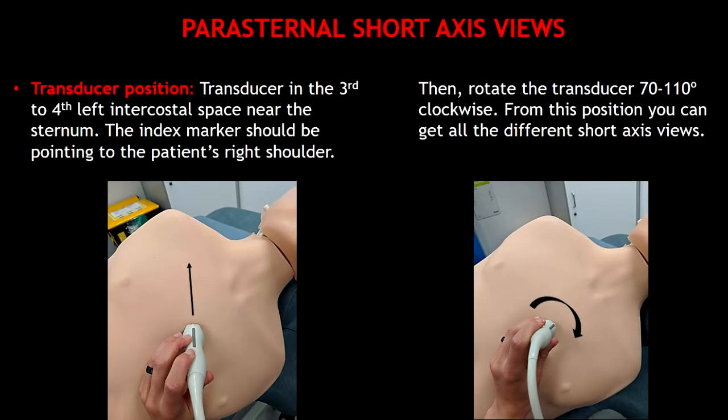To obtain any parasternal short axis view, place the transducer in the third to fourth left intercostal space near the sternum with the index marker pointing the patient's right shoulder. Then rotate the transducer 70 to 110 degrees clockwise. From this position you are going to be able to obtain all the different short axis views.